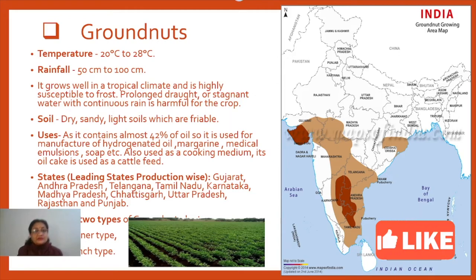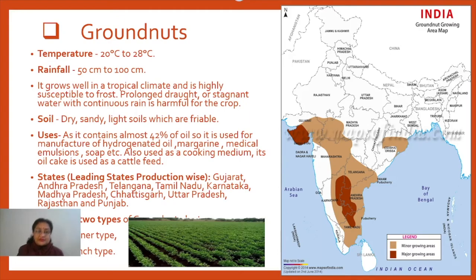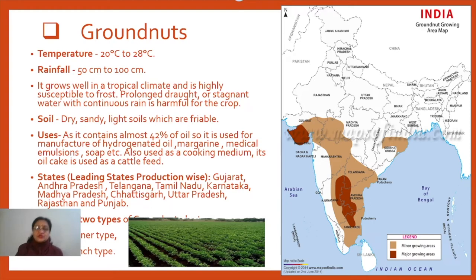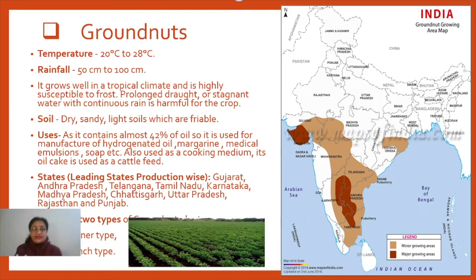To some extent groundnut is also produced in Uttar Pradesh, Punjab, and Rajasthan. Key points to remember: it must be kept safe from frost conditions; very less rainfall or too much rainfall both harm the crop; temperature should be between 20 to 28 degrees; and rainfall of 50 centimeters to 100 centimeters is sufficient for this crop.